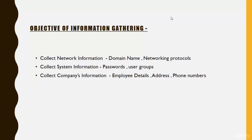The objective is to collect company information and network information. This includes domain names and networking protocols like TCP, UDP, and ping. System information such as passwords, user groups, and usernames, as well as company information like how many employees are working there, their names, addresses, phone numbers, and employee IDs — all of that comes under the information gathering part.